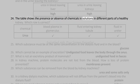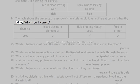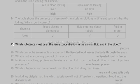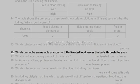24. The table shows the presence or absence of chemicals in solutions in different parts of a healthy kidney. Which row is correct? Chemical: blood plasma in glomerulus, fluid entering kidney tubule, fluid with urea. 25. Which substance must be at the same concentration in the dialysis fluid and in the blood? Glucose.